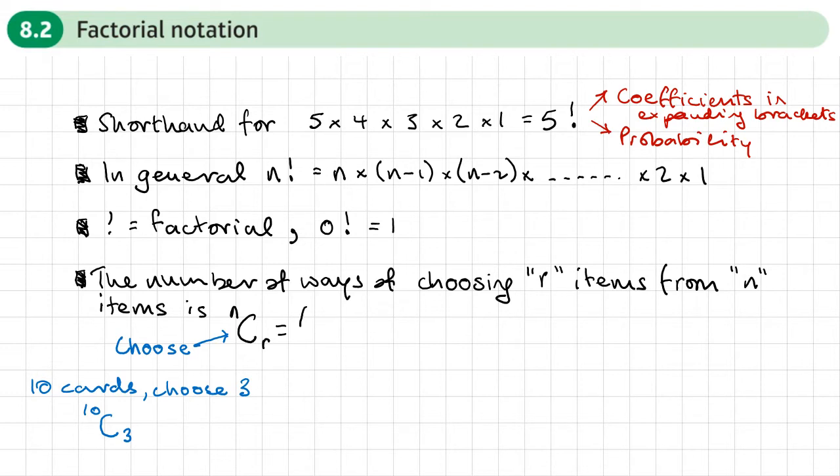And there are different ways of writing this. So we can write it like this with brackets n over r like this. It means the same thing. And actually, let's go back and work this out. So if I typed in 10, shift, divide and 3, I get 120. So actually, there'd be 120 ways of choosing 3 different cards from a pack of 10 cards.